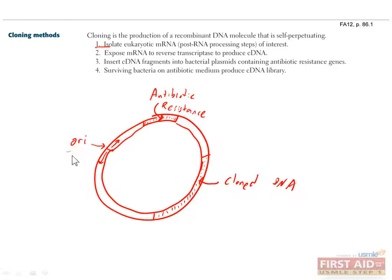This origin of replication is important because if the DNA doesn't replicate, then after a few rounds of division of the cell it's in, most cells won't get any copies of it. This antibiotic resistance gene is important because it allows you to use antibiotics to kill any cells that didn't get your cloned DNA, so you can make sure all the cells have it. And of course, here's the DNA that you cloned.